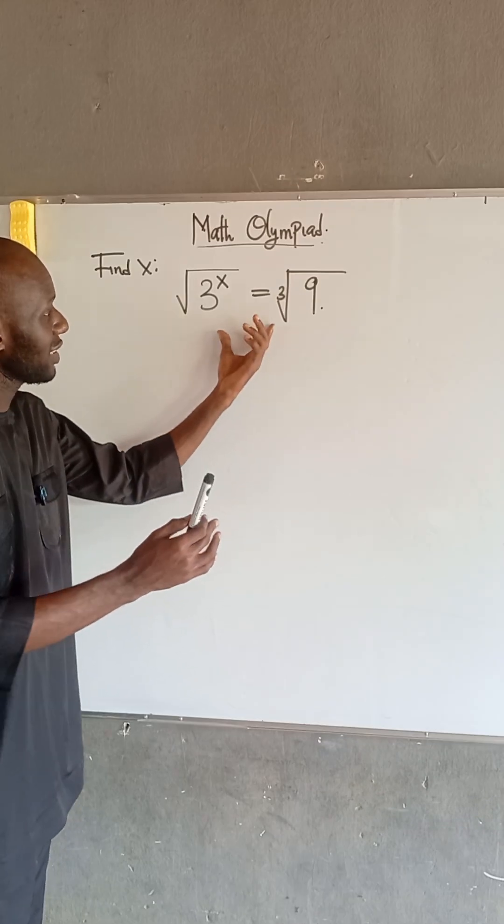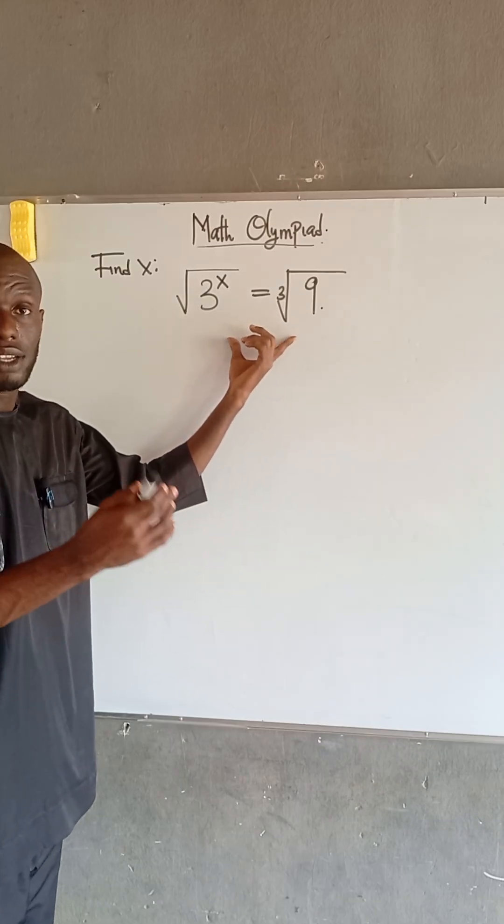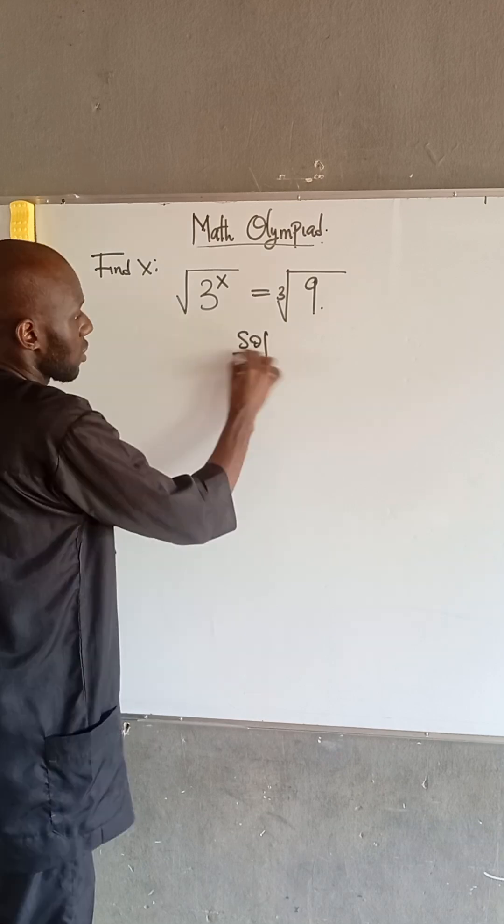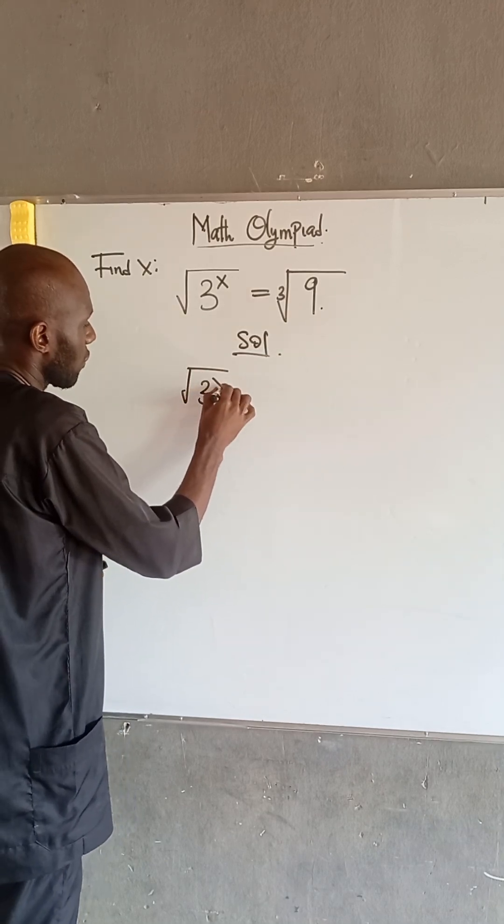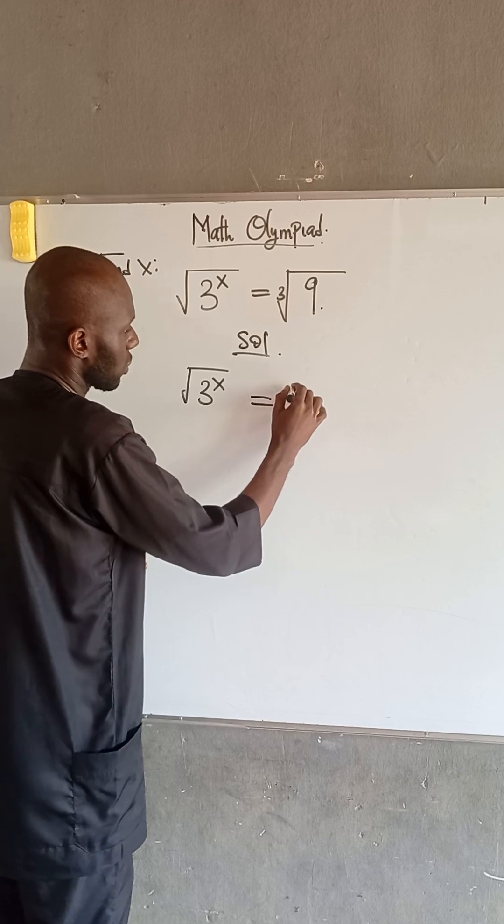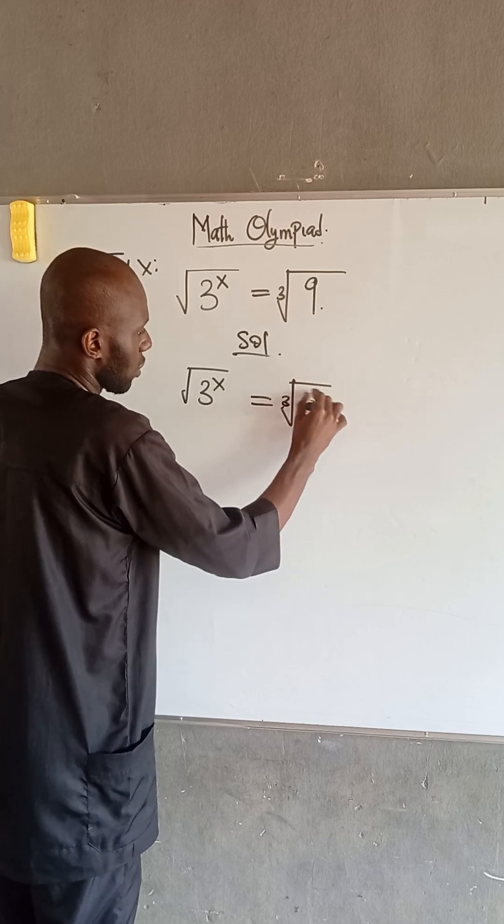In this video, we are given these expressions and we are asked to find the value of x. We have that root of 3 to the power of x is equal to cube root of 9.